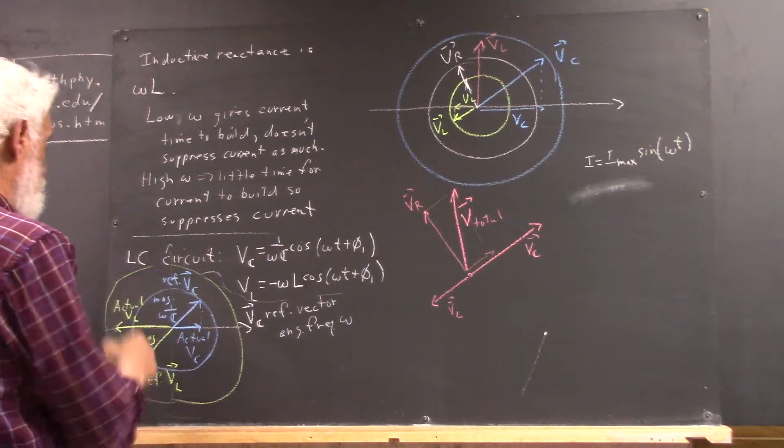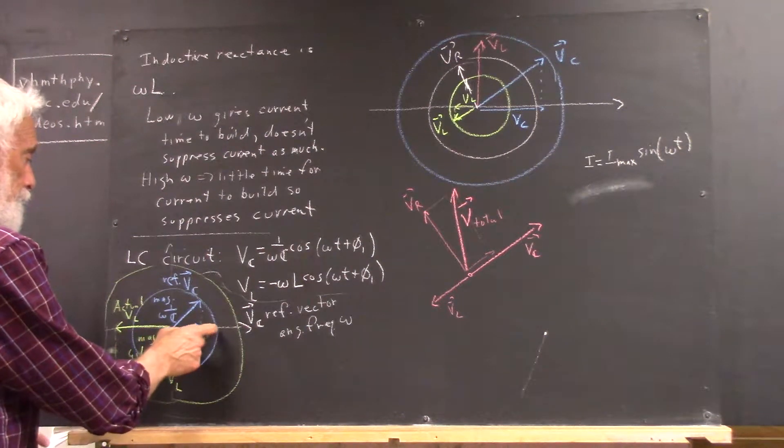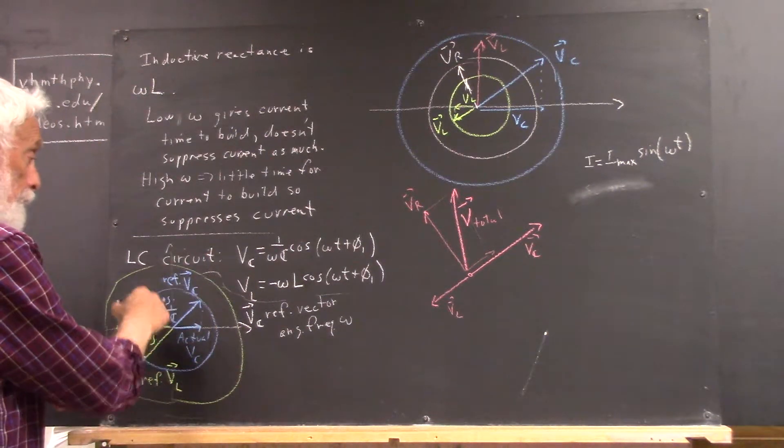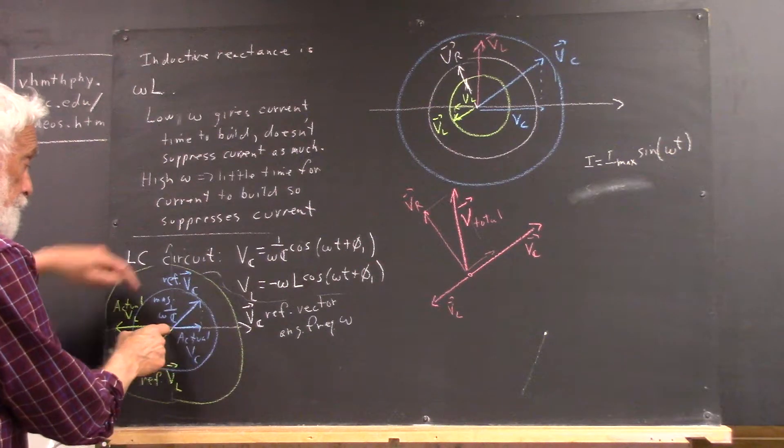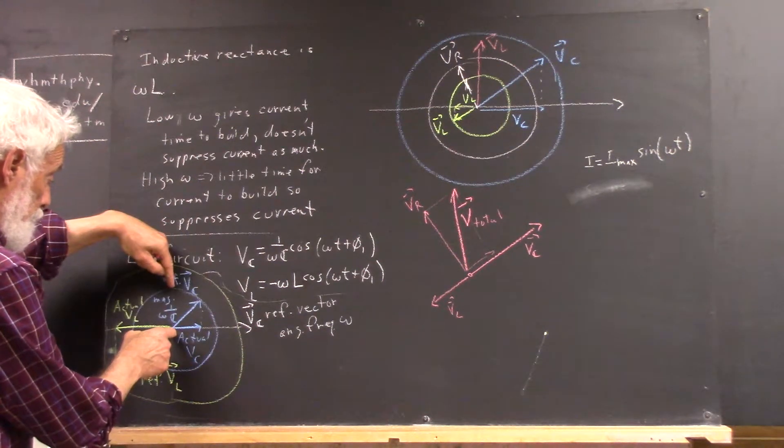As you go around the circle, then, this vector is going to decrease. If you keep going around from here, this blue vector is going to decrease to zero by the time this vector rotates to here.